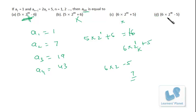But for assurance, let's try for a₃ also. So it's 6 times 2² minus 5, that is 2 squared is 4 times 6 equals 24 minus 5 equals 19.